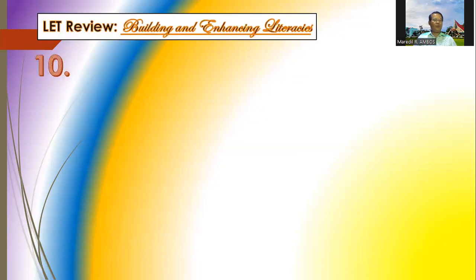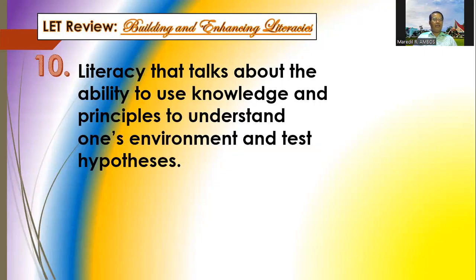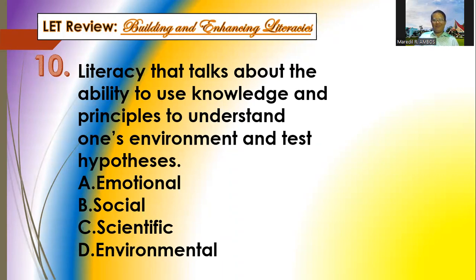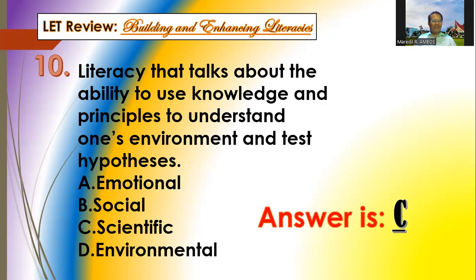Question number ten: literacy that talks about the ability to use knowledge and principles to understand one's environment and test hypothesis. Options: A is emotional literacy, B is social literacy, C is scientific literacy, and D is environmental literacy. The answer is letter C — it's scientific literacy. The keywords to remember are environment and test hypothesis.